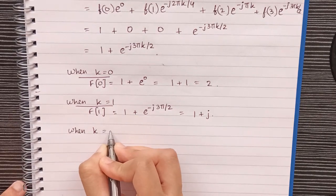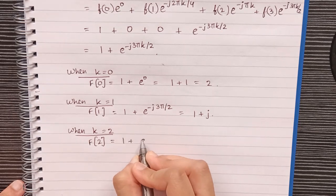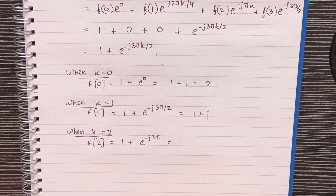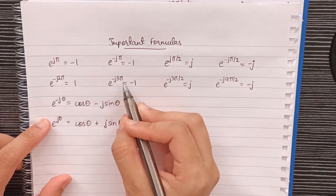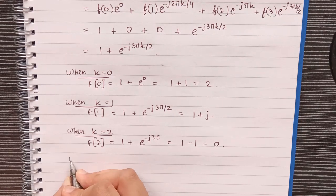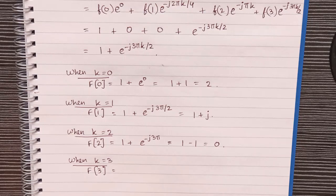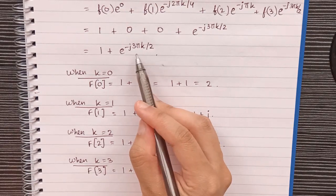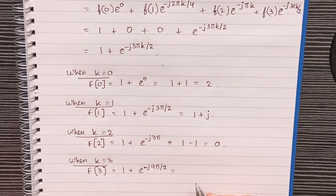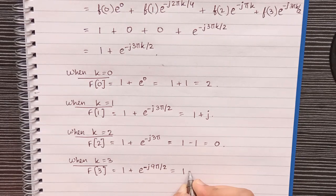When k = 2: F(2) = 1 + e^(−j3π) [since the 2/2 cancels]. From our formulas, e^(−j3π) = −1, so this is 1 − 1 = 0. When k = 3: F(3) = 1 + e^(−j9π/2) [since 3×3 = 9]. From our formulas, e^(−j9π/2) = −j, so we get 1 − j.